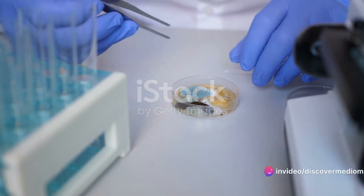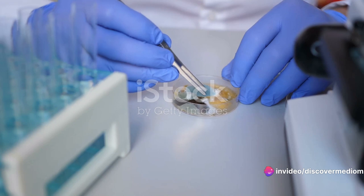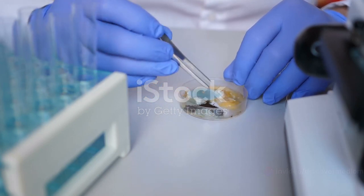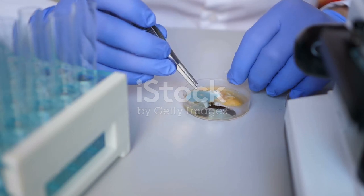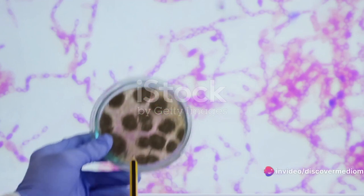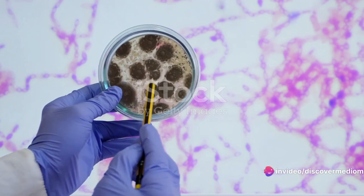One day, in the year 1928, a seemingly ordinary day evolved into an extraordinary event. Fleming had left a Petri dish of Staphylococcus bacteria uncovered, and upon returning, he found something unusual. There was a mould growing in his bacterial culture, and around this mould, the bacteria were dying.